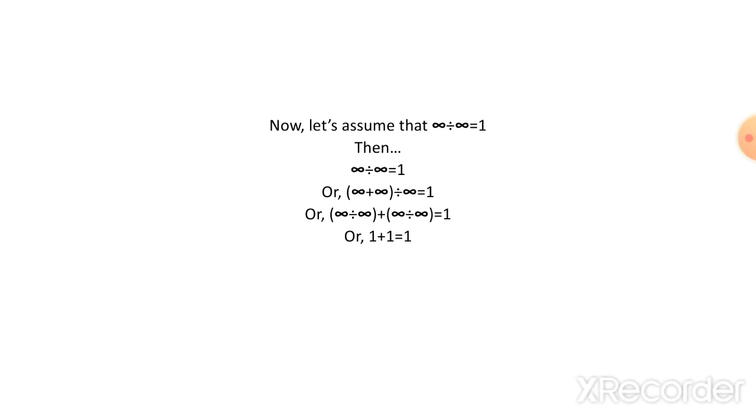And if we just take 'divided by infinity' common, then ∞÷∞ + ∞÷∞ = 1. And we have assumed that ∞÷∞ gives us 1, so 1 + 1 = 1.